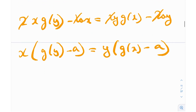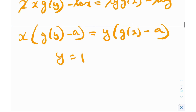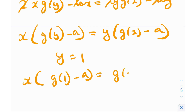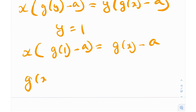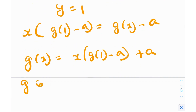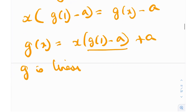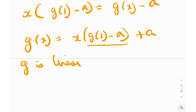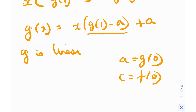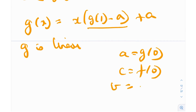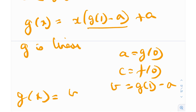Most of our work is done. Now I can just plug in y equals 1, and once I do that I'll get x times (g(1) minus a) equals g(x) minus a. So g(x) equals x times (g(1) minus a) plus a. You can see that g is linear. g(1) minus a is a constant — let me define that as b. So g(x) equals bx plus a, where a equals g(0) and c equals f(0).